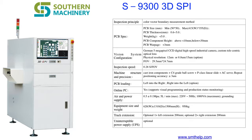12 Common Errors That Cause FAI Rejection — First Article Inspection. FAI is of vital importance to industries governed by strict guidelines and a high standard of quality assurance. These are the 12 common errors which cause FAI rejection.